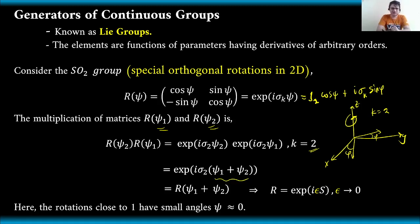This means that we can express R as a function of psi two times R as a function of psi one in terms of a certain generator, where S is what we call as a generator. This is actually an operator which is a generator. Here, the rotations close to one have small angles phi approximately equal to zero.